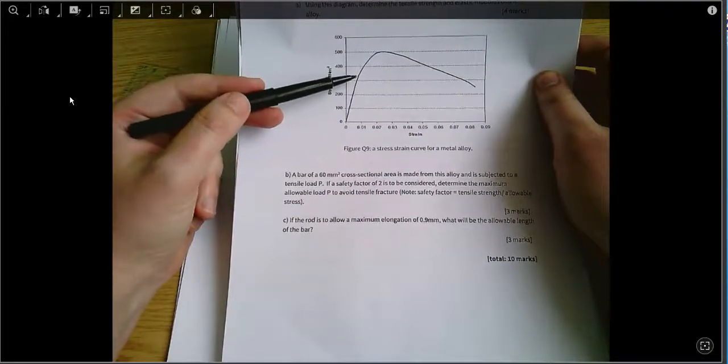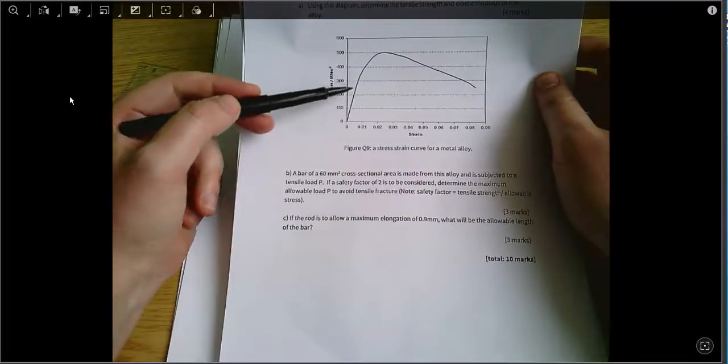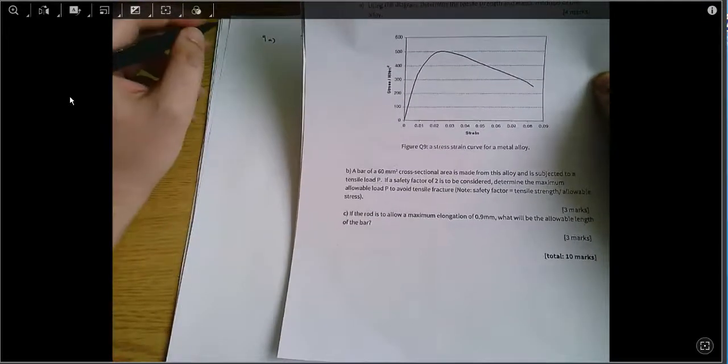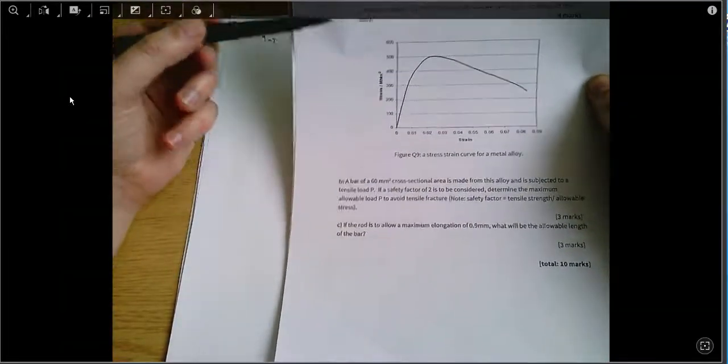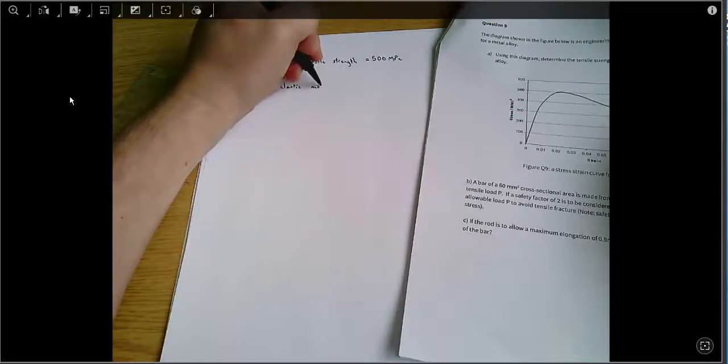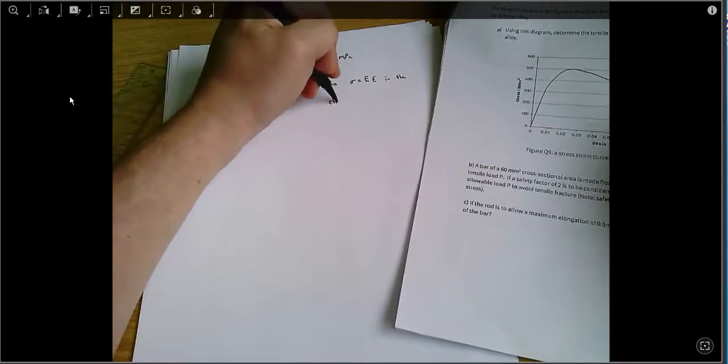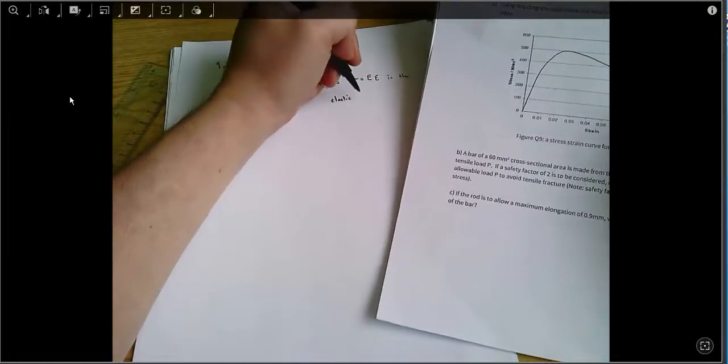There's also of course the yield strength, which is the limit of the elastic region, and the elastic region is this kind of straight section here. That's what we're interested in when we want to find the elastic modulus. The elastic modulus, remember, elastic modulus E gives sigma equals E epsilon in the elastic region. So it's the same thing as Young's modulus in a different name.